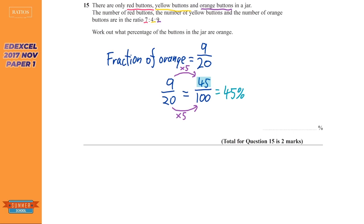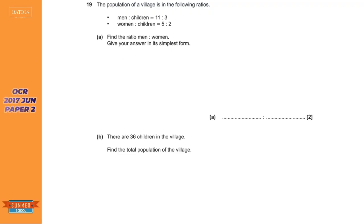If you have a fraction over 100, the top is the percentage. So it's 45 percent — percent just means per 100, so 45 over 100 is 45 per 100, which is 45 percent. Next up we've got an OCR question. This is quite common now — to have questions that involve two ratios that you have to combine. We are given men to children as 11 to 3.